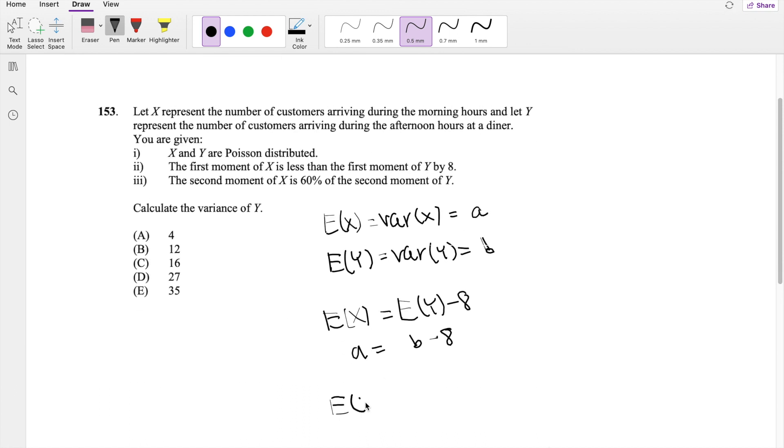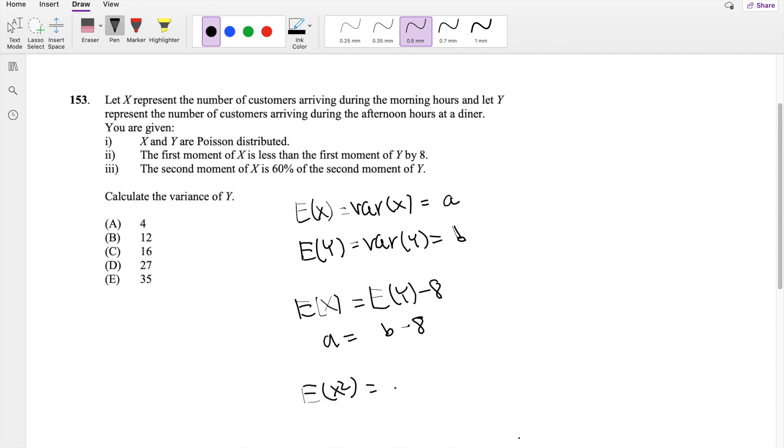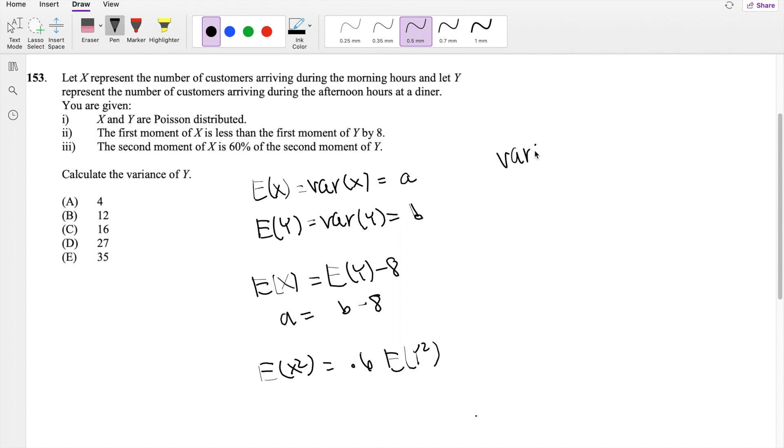The second moment of X, so E of X squared, is 60% of the second moment of Y. But we know variance of X is equal to the second moment minus expectation squared. So if we put it in terms of a, you get a is equal to expectation of X squared minus a squared. So then that would give expectation of X squared to be equal to a plus a squared.